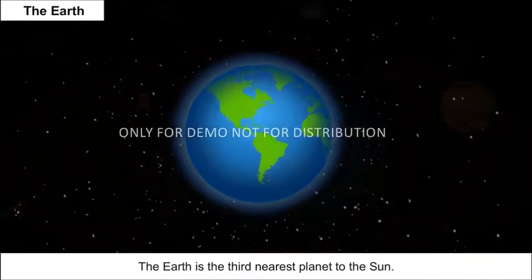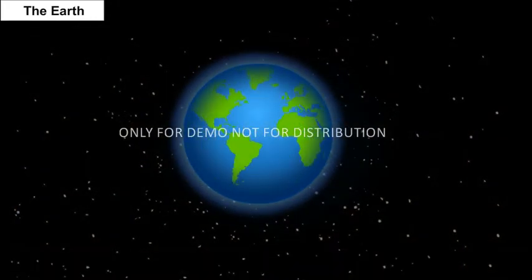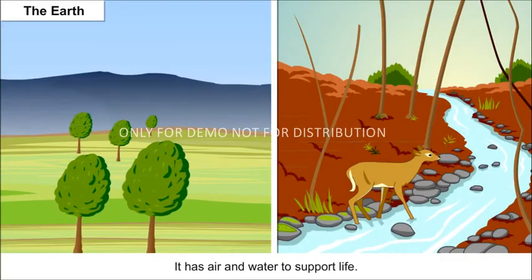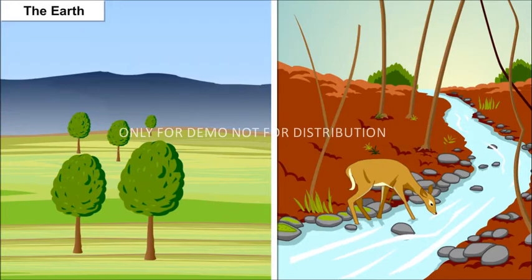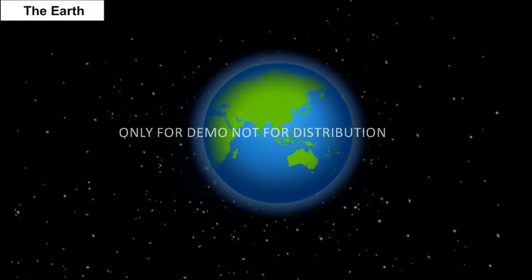The Earth is the third nearest planet to the Sun. It is the fifth largest planet. It has air and water to support life. Two-thirds of the Earth's surface is covered by water. Therefore, it is called the blue planet.